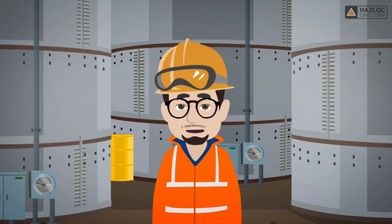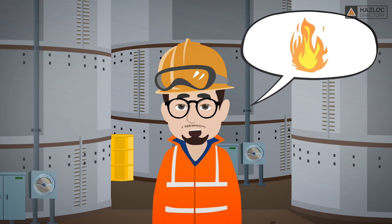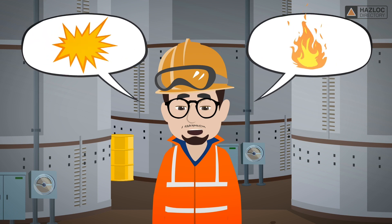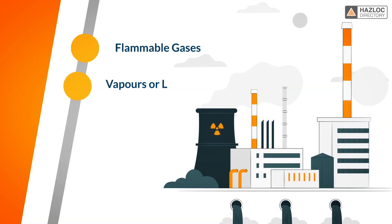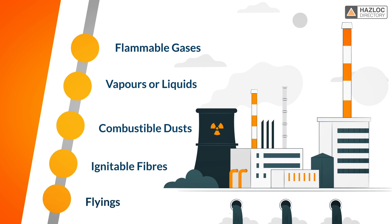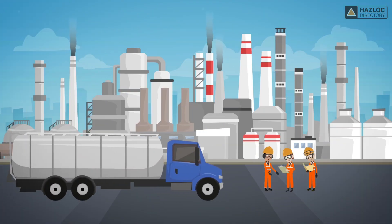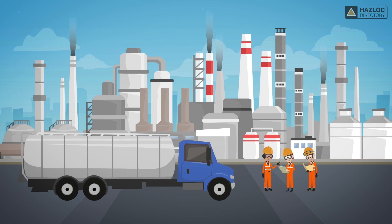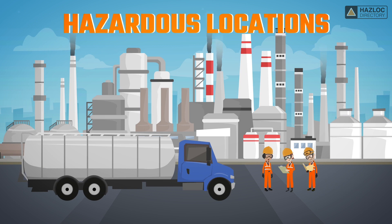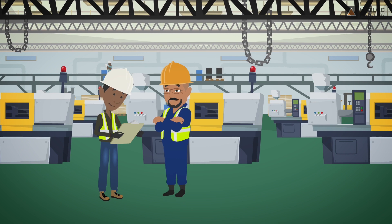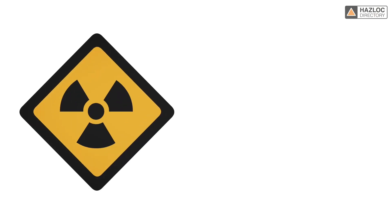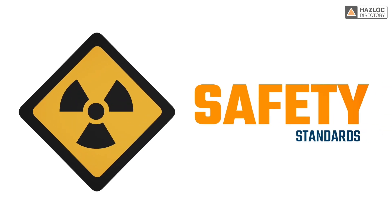Hazardous locations are defined as those where fire or explosion hazards may exist due to the presence of flammable gases, vapors or liquids, combustible dusts, or ignitable fibers or flyings. Electrical equipment is often installed in locations where there are gases present, making them hazardous locations. Therefore, it is required that these products be designed and constructed in compliance with safety standards in order to be safe for use in such hazardous locations.